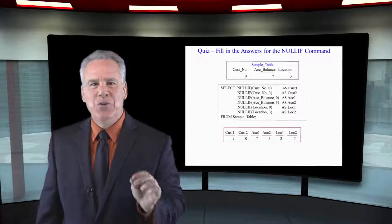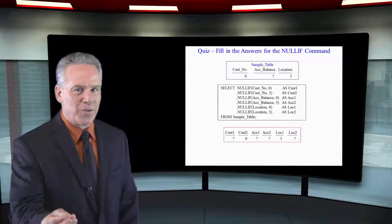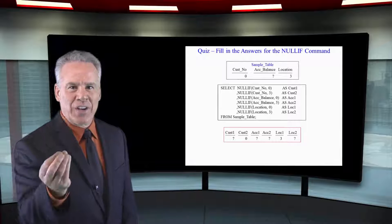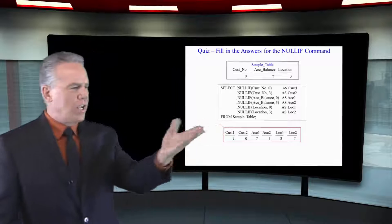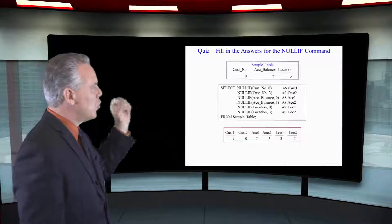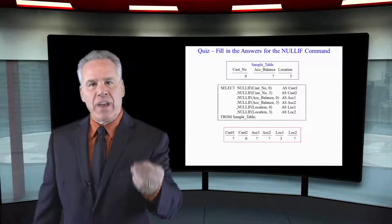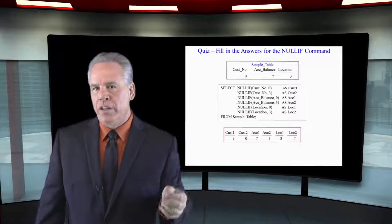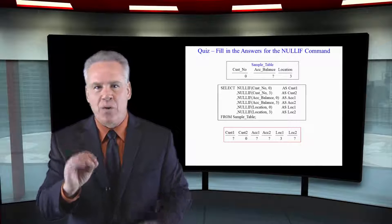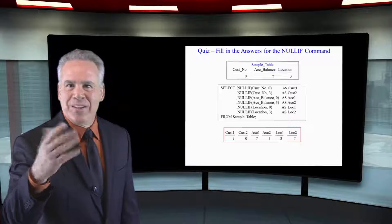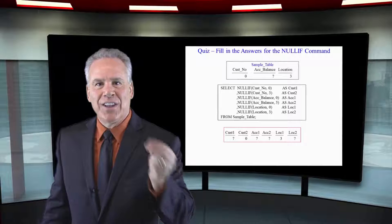I've given you two examples of each column, so you are going to really understand this very well. Our customer number really equals zero in the table. We talked about that first example where we said NULLIF cusno, zero. Well, it is a zero, so it's going to make this a null.